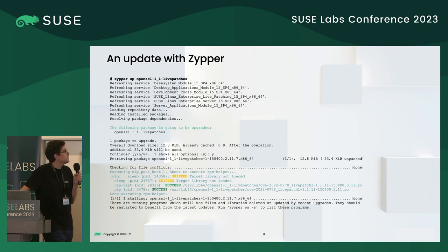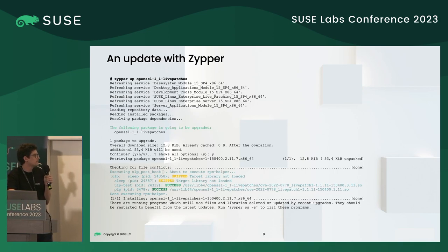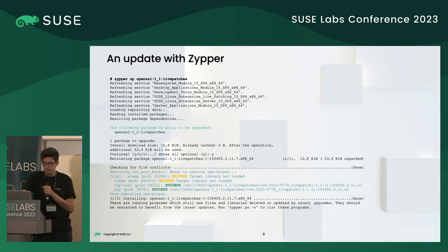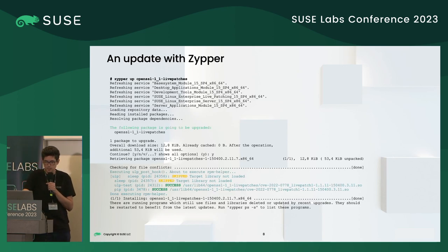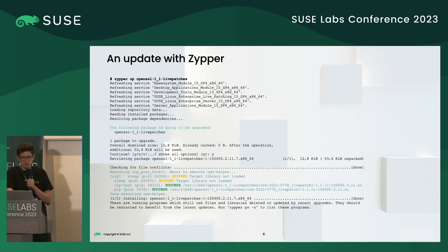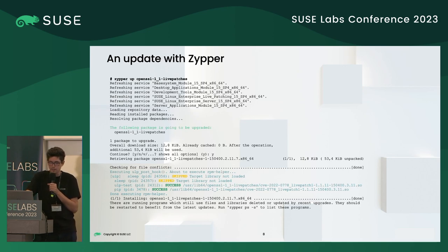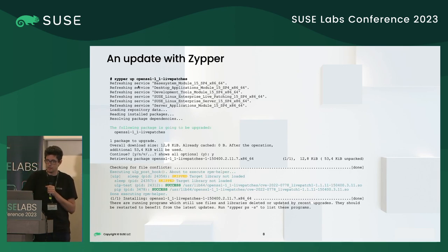Here is an example of an update shipped through livepatches — a livepatch to OpenSSL. You can see that the openssl-on-SLE package is installed; the ULP tool tries to install the livepatches into the system. It shows that the livepatch wasn't suitable for the sleep process because the target library, OpenSSL, wasn't loaded in that process. It also shows that it was successfully installed into the ulp-tests and pip processes, and displays which livepatch was installed.